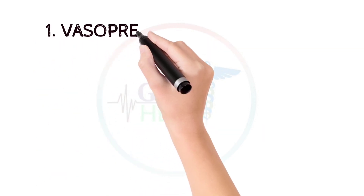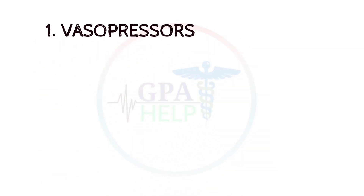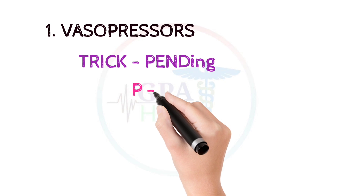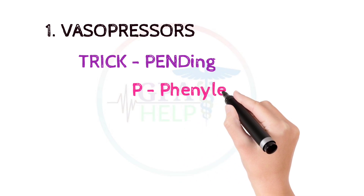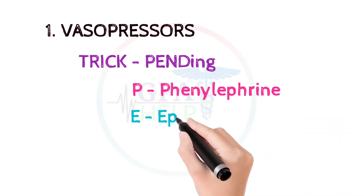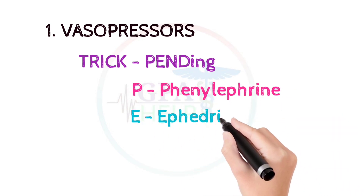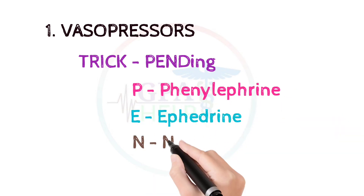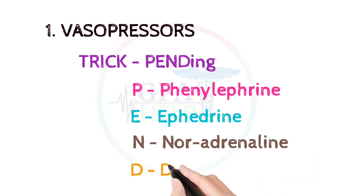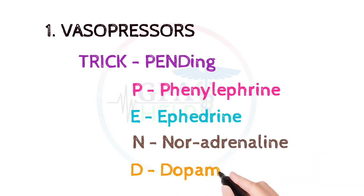The first class is vasopressors. You can remember these drugs by the trick: PAND. P for phenylephrine, A for ephedrine, N for noradrenaline, and D for dopamine.